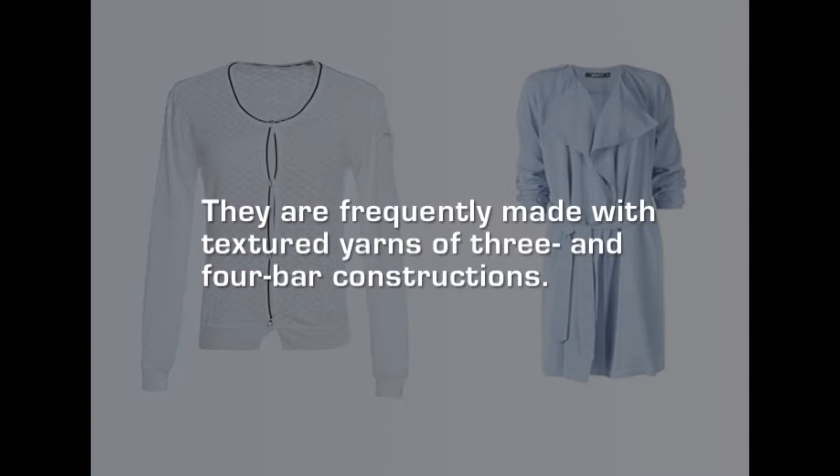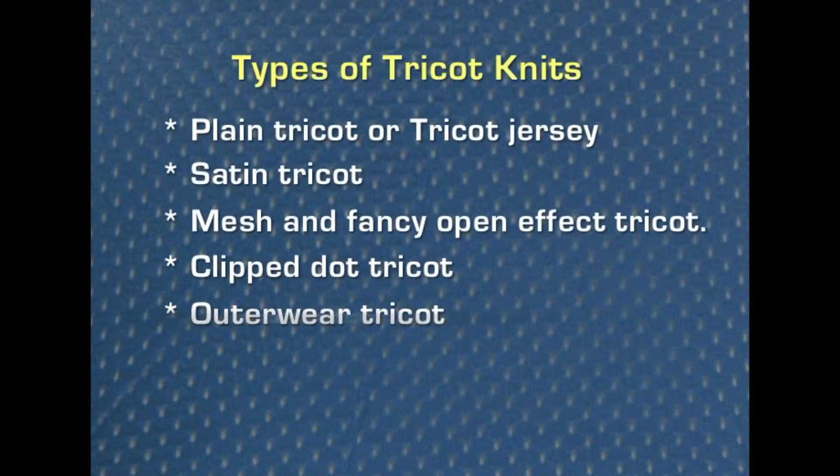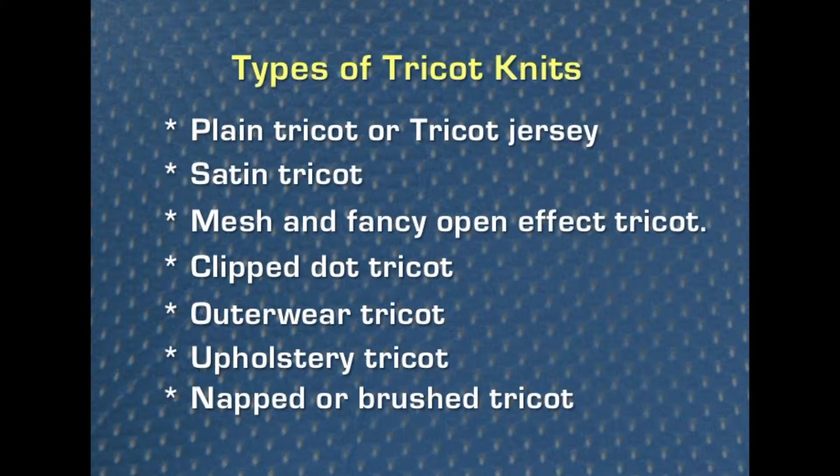Outer weight tricot fabrics are frequently made with textured yarns of 3 and 4 bar constructions. They often have interesting colors and surface effects. Sometimes the fabrics are made with inlay yarns, which are additional yarns from a separate warp beam caught into the knit stitches to add texture, design and stability. Upholstery tricot is often a 2-bar jersey made of relatively heavy filament yarn and rather tightly knitted. There are many variations including 3 and 4 bar constructions with interesting surface and color effects.